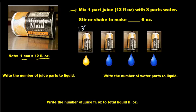So I can write 12. I'll just write OZ for ounce. We have 12 ounces here. 12 ounces. And 12 ounces. The question states, write the number of juice parts to liquid.